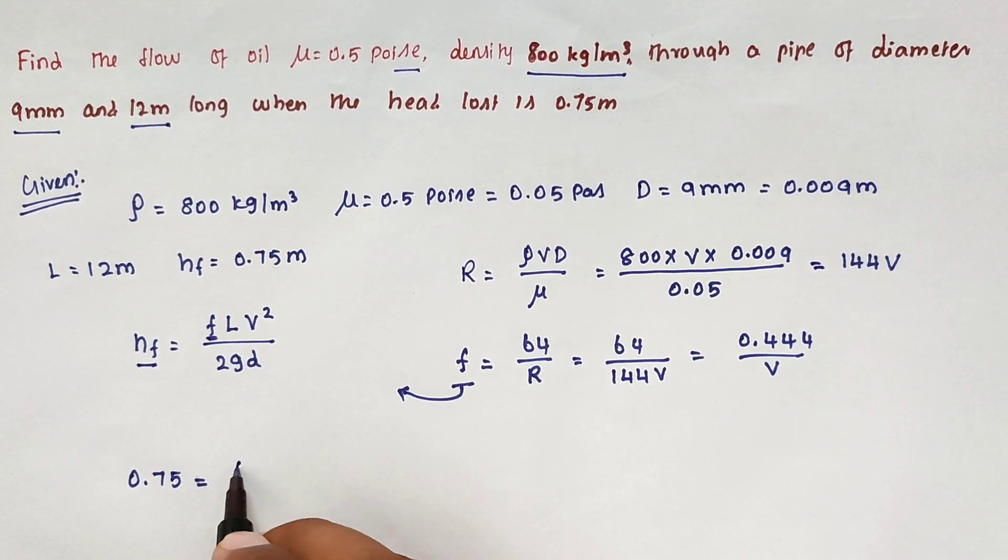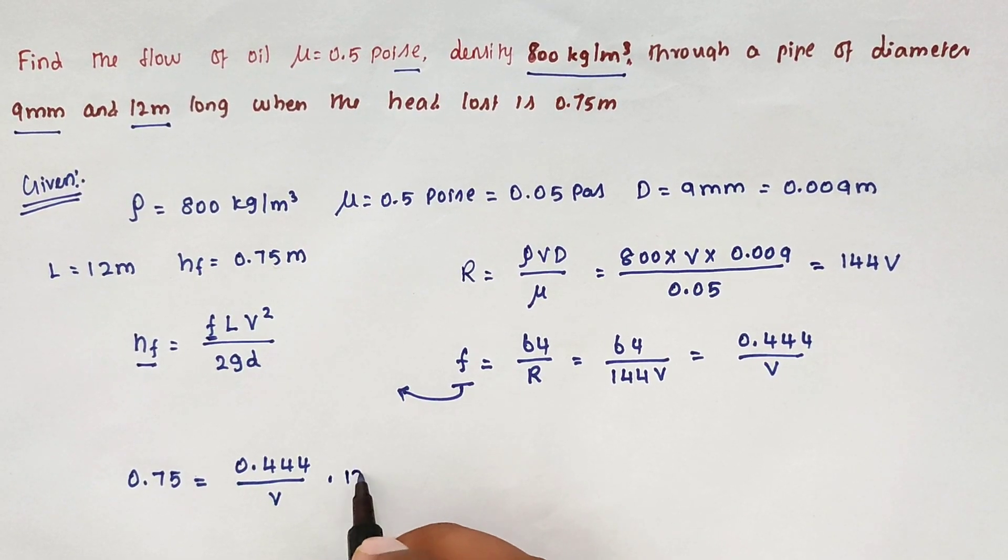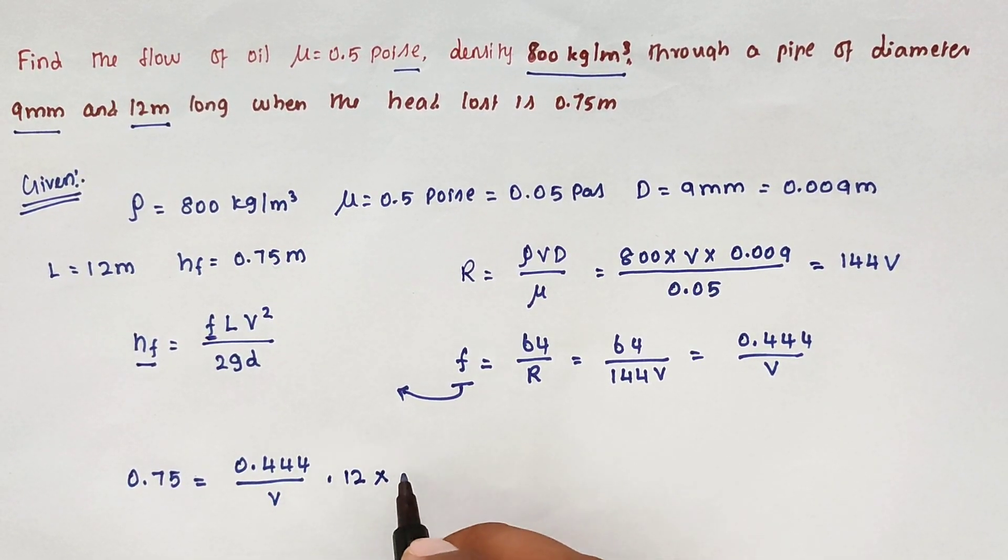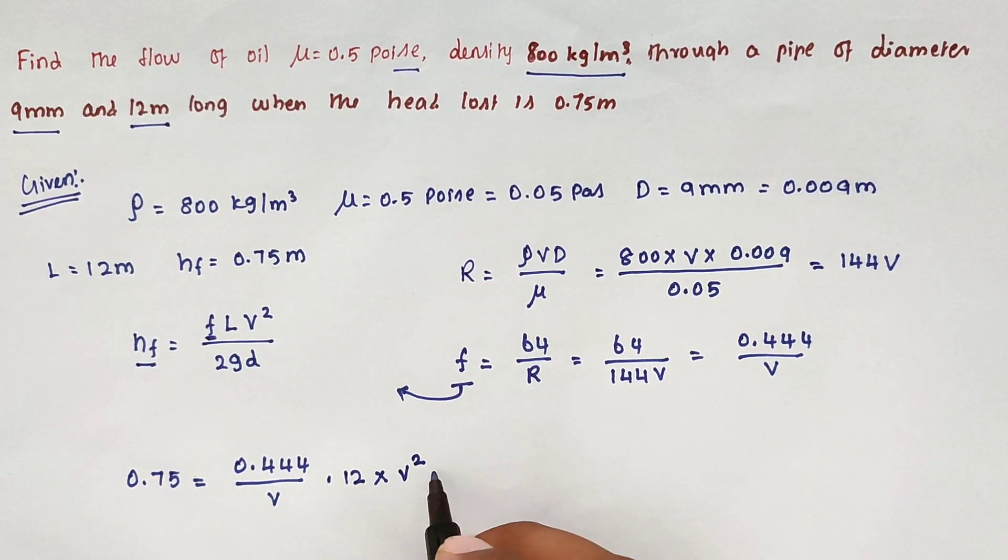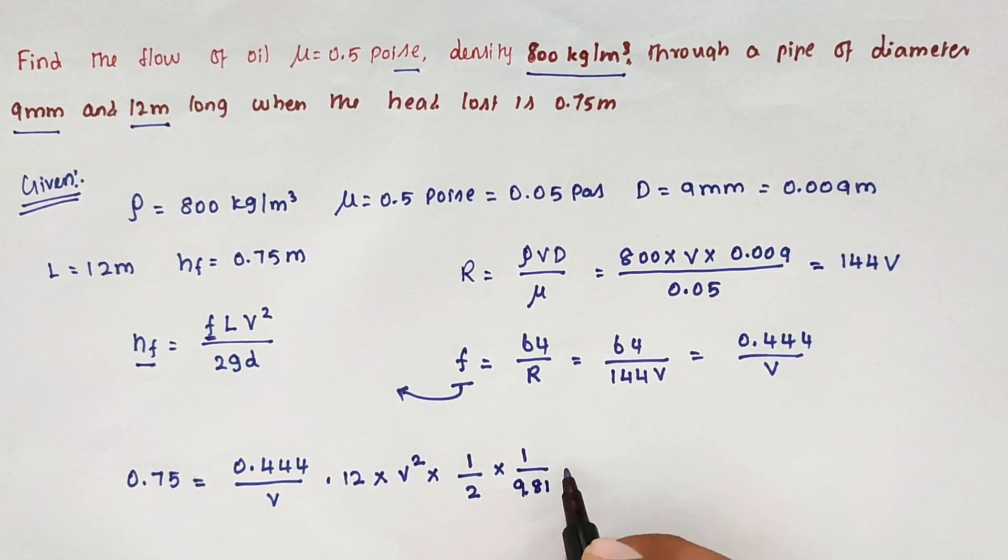equal to f value 0.444 divided by V into L value 12 meter into V square into 1 divided by 2 into g value 9.81 into D value 0.009.